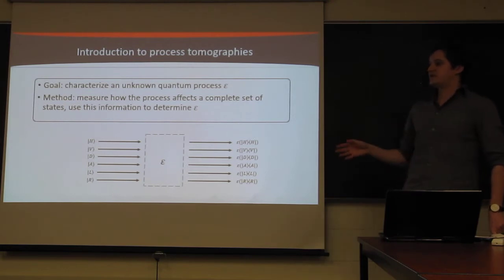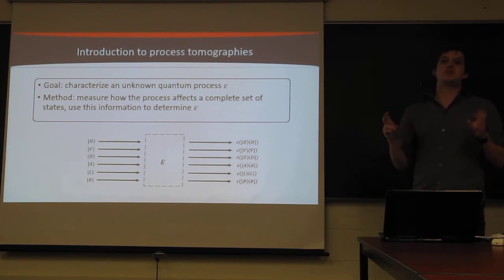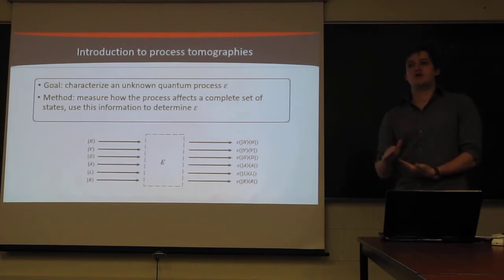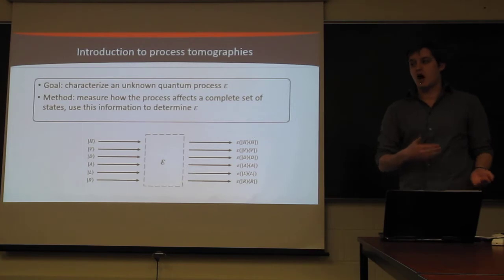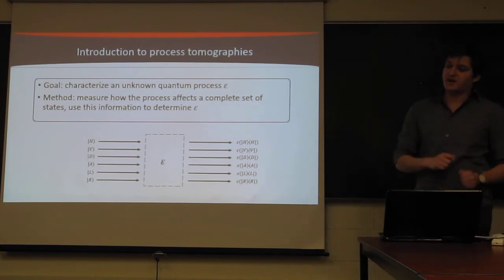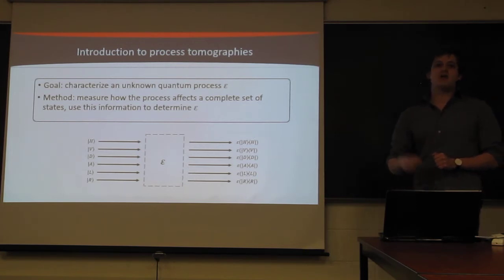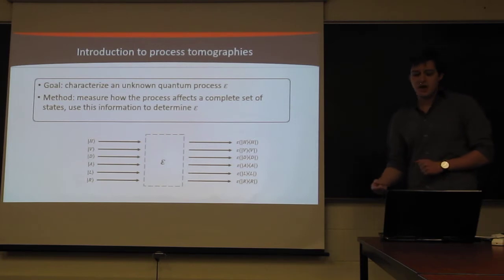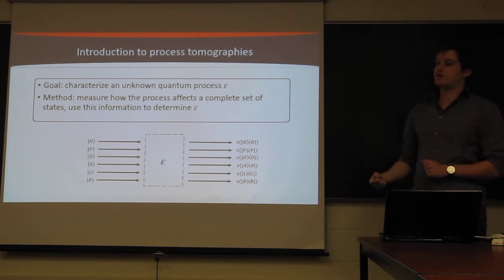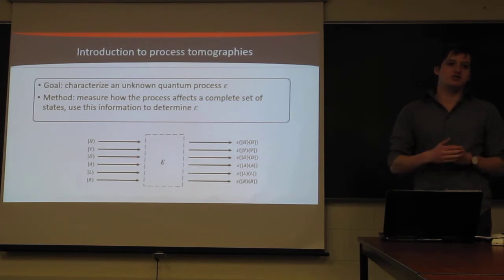The way we're going to do that is essentially performing almost a tomography of tomographies. We're going to take six input states that we know. Rather than just some random unknown input state, we'll take six input states, put each of them through the process, and then we'll take a tomography of whatever comes out. And we'll use the tomographies of whatever comes out in order to figure out what the process would do to anything.